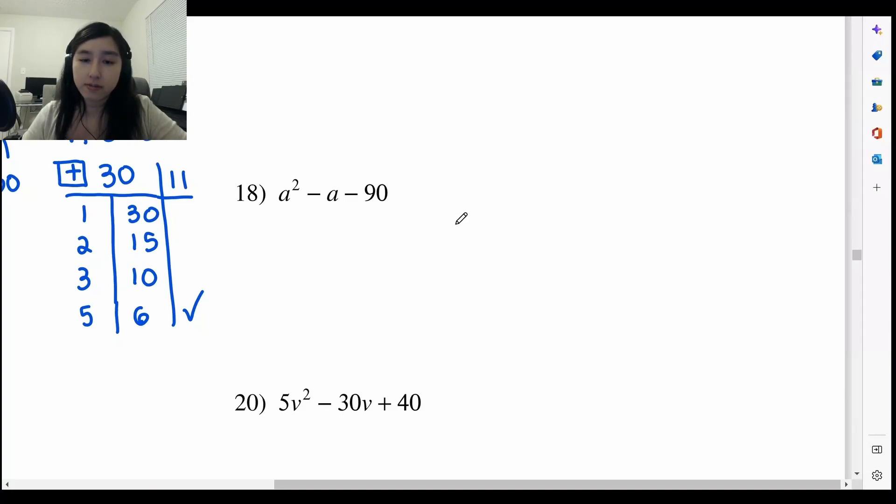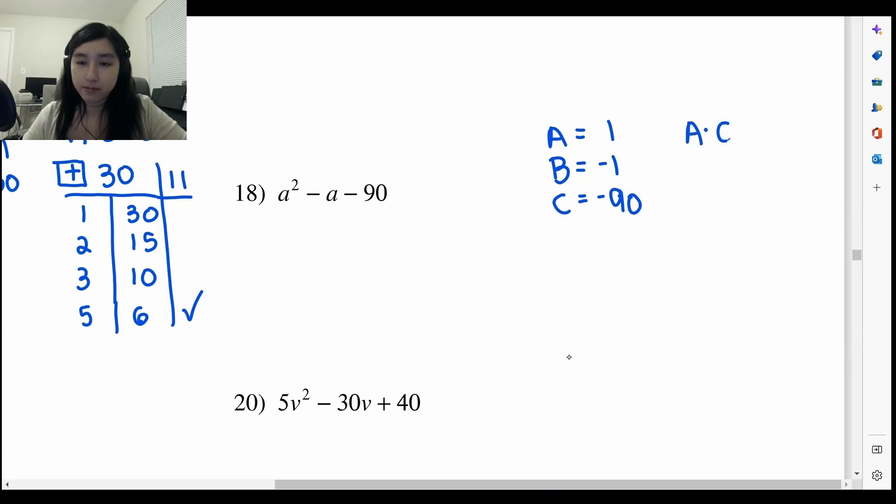Question 18. So, same technique. We find A, B, and C first. Can you tell me what is A, B, and C? A would be 1. B would be negative 1. Very good. And C would be negative 90. Exactly. Alright, can you tell me what would our A times C here be? Negative 90. Very good. And we need to find the factors of? 90. Very good. We find the factors of 90 there. So, due to Katie's attention span, I have to be very structured in how I teach here so that we can keep up with the flow.